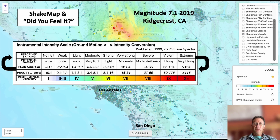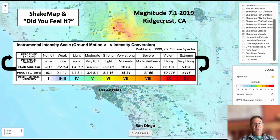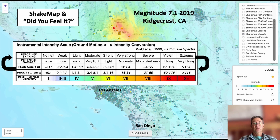We can take historical events and assign intensities, and we can take modern events and look at ground acceleration — using any combination of these to produce good ShakeMaps for historical earthquakes.